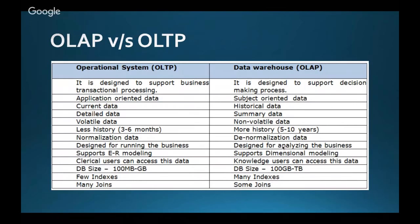OLTP supports ER modeling whereas OLAP supports dimension modeling. Clerical users can access OLTP data whereas knowledge users — power users who want to analyze data and make decisions — use OLAP. DB sizes differ: OLTP can range from 100 MB to 100 GB, whereas OLAP can range from 100 GB to 100 TB. OLAP has fewer indexes, while OLTP has many more joins because it is running in real time dealing with transaction systems, whereas OLAP has fewer joins.